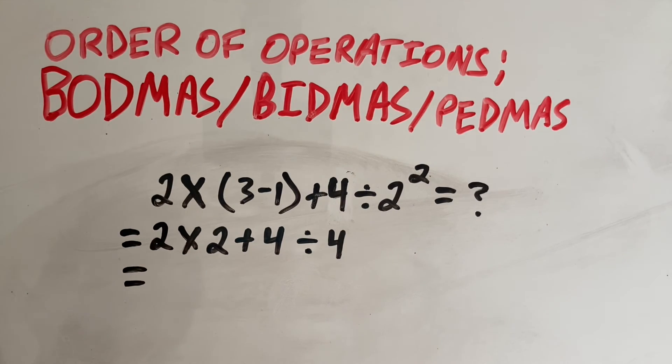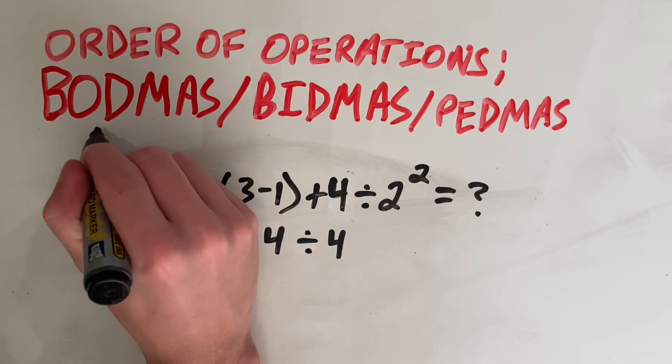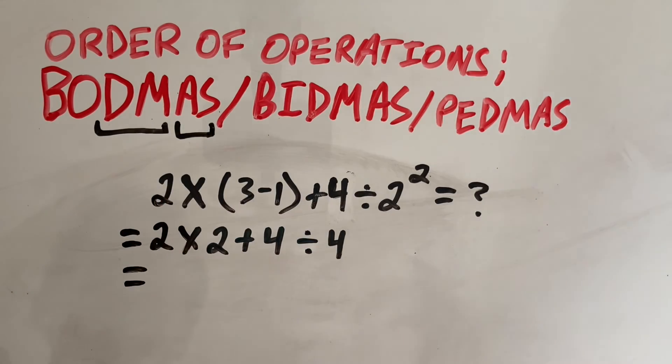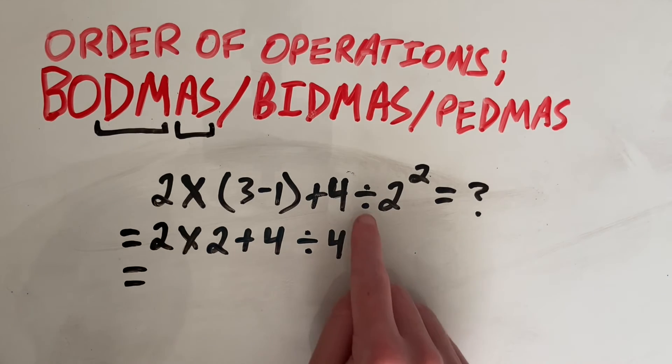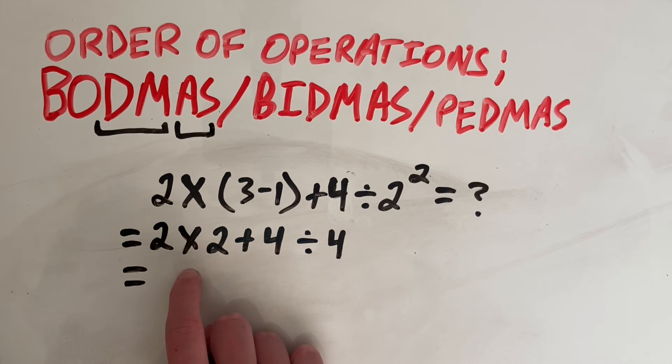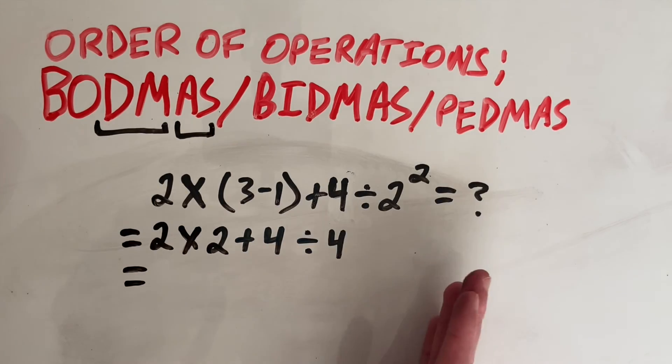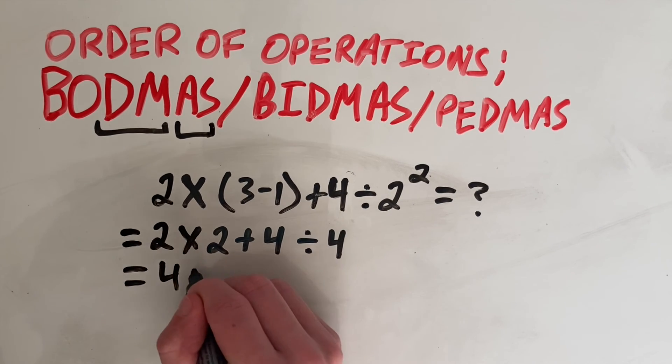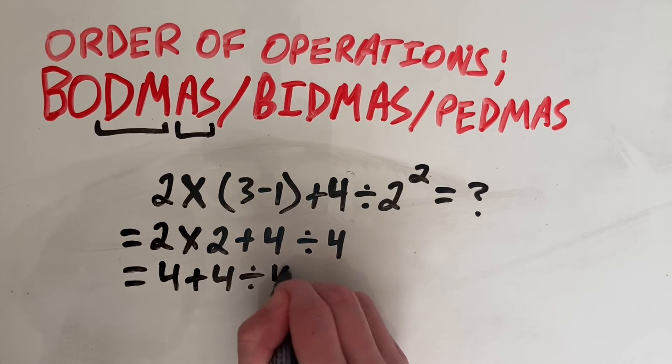Next we have division. But here's the important bit. Remember, division and multiplication are interchangeable along with addition and subtraction. So we do whichever one comes first. So although we have a division, we also have a multiplication. And because our multiplication comes first, because we're working left to right, we do our multiplication before our division. So that will give us 4 plus 4 divided by 4.